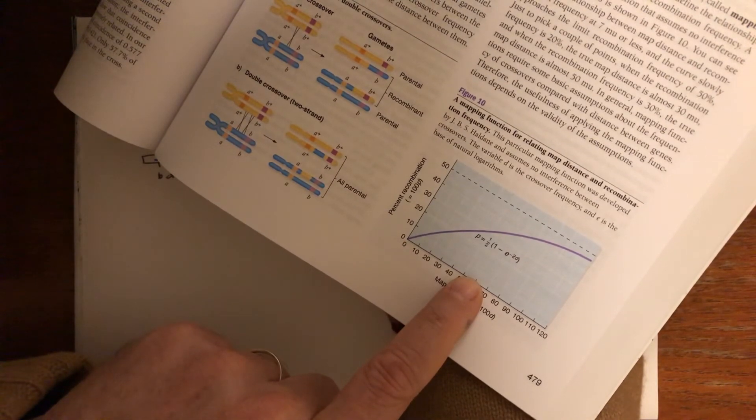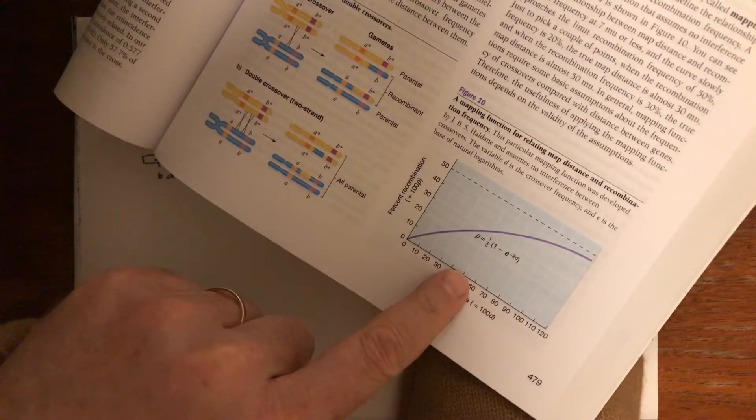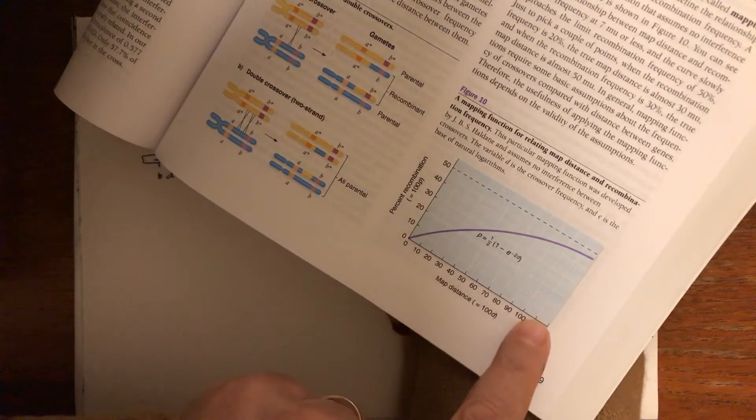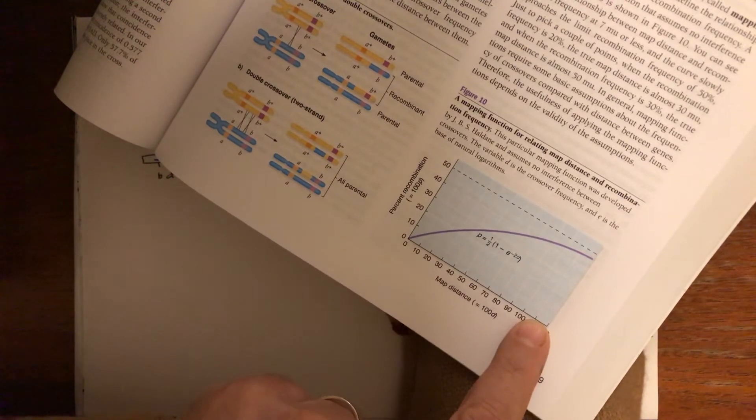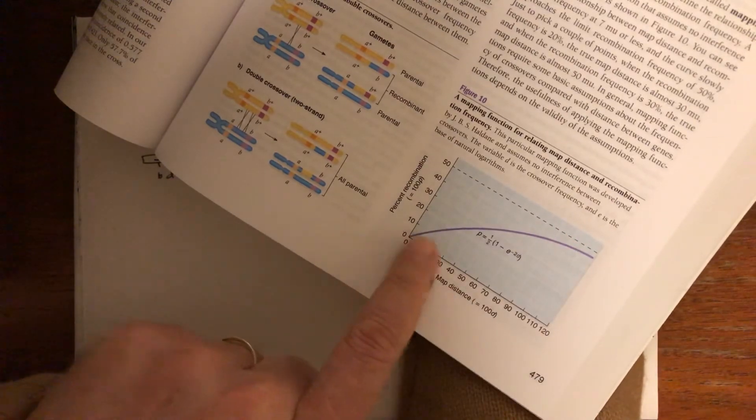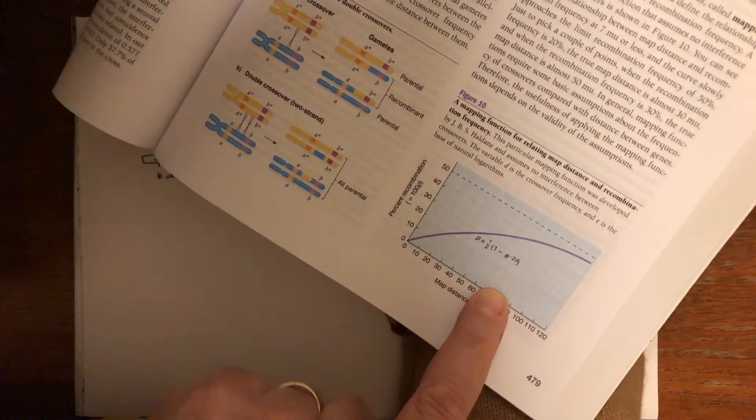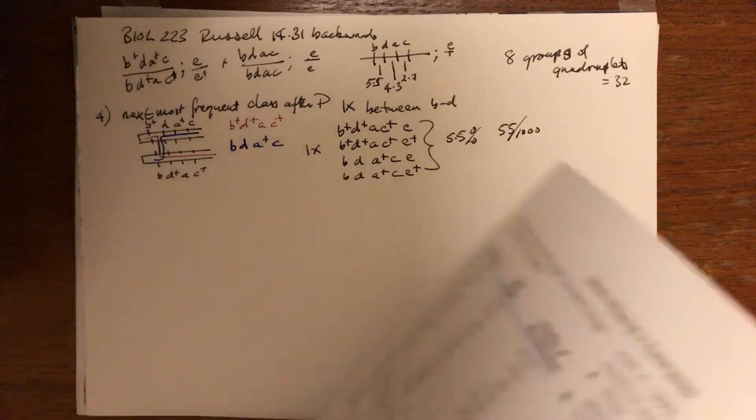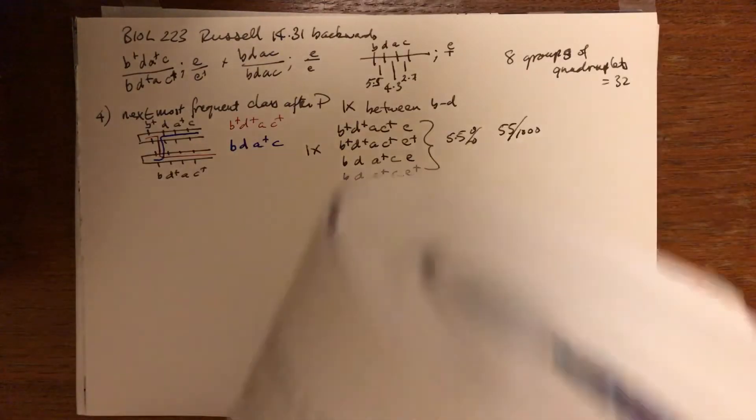It cannot be that recombination exceeds 50 percent. So what happens is as the two loci are further and further apart, there's more and more likelihood of double crossing over. Even numbers of crossing over will look as if it's parental. And of course, if there were an infinite distance, it could only be like independently assorting, which should be 50 percent.